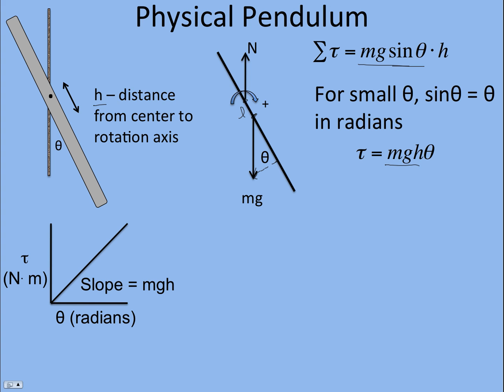Now I can make a graph, kind of like we were doing with spring mass system where we did force versus x, or a simple pendulum we did force versus the arc length x. Now we're doing torque in newton meters versus theta in radians. The slope of this line, as you can see, would be mgh and it would be a straight line, at least for small angles out to 20, 25, 30 degrees, depending on how much deviation you're willing to take.